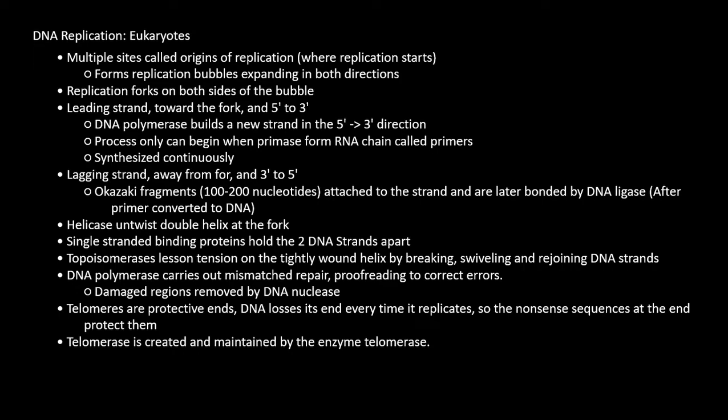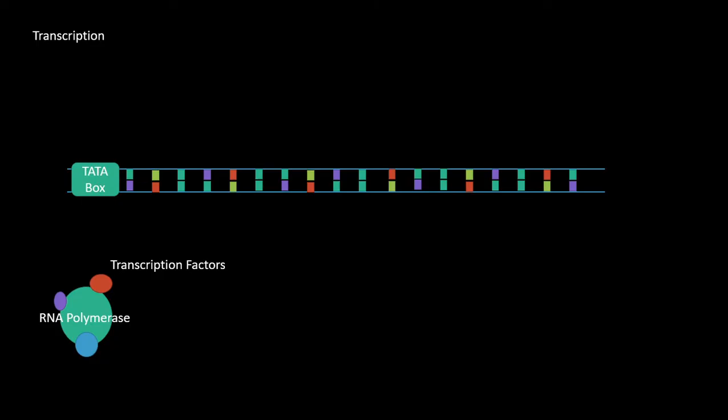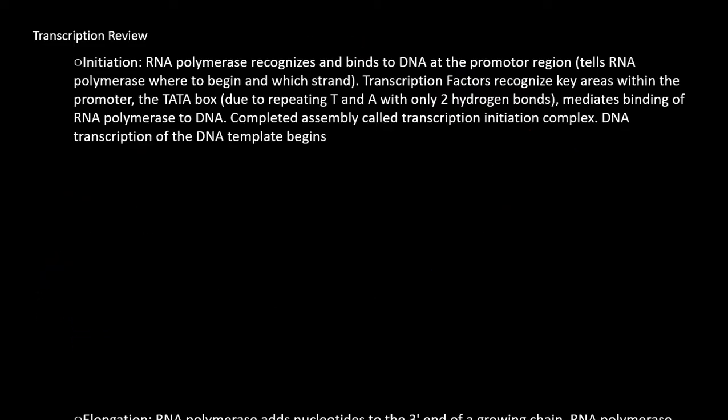On to transcription and RNA processing. Transcription has three major parts: initiation, elongation, and termination. In initiation, RNA polymerase recognizes and binds to DNA at the promoter region. This is the region that tells RNA polymerase where to begin and which strand to transcribe. Transcription factors recognize key areas within the promoter, the TATA box. Like we said earlier, TATA box, it's due to the repeating TNAs which with only two hydrogen bonds, so two hydrogen bonds are easier to break apart. This also leads to more mutations within those, but let's not get ahead of myself. And it mediates the binding of RNA polymerase to DNA. When it's completely assembled, it's called the transcription initiation complex. DNA transcription of the DNA template begins.